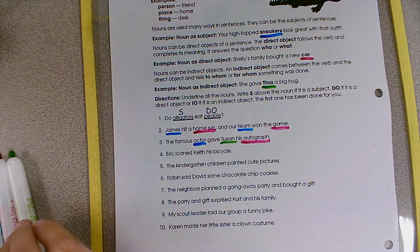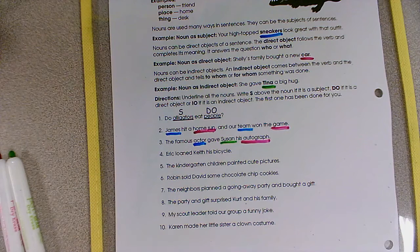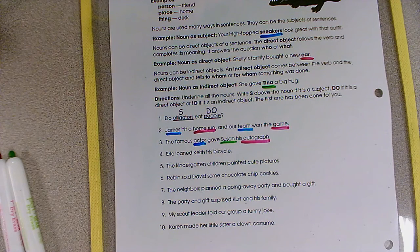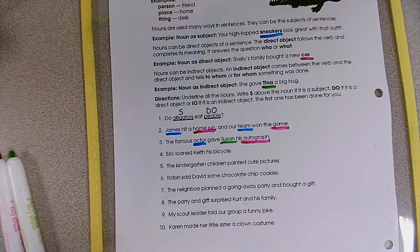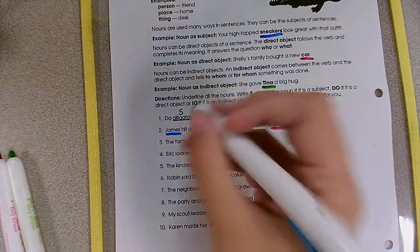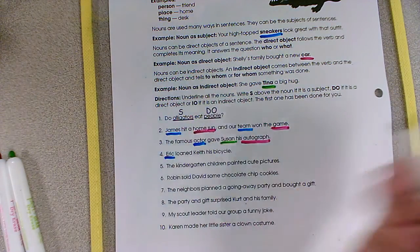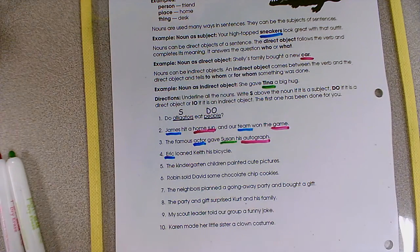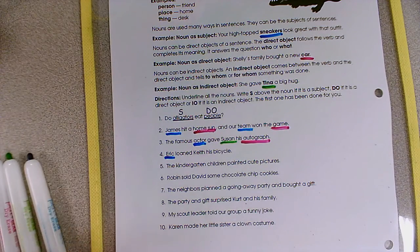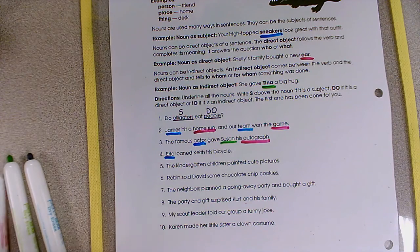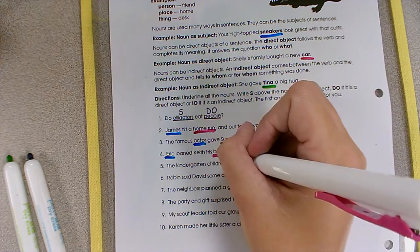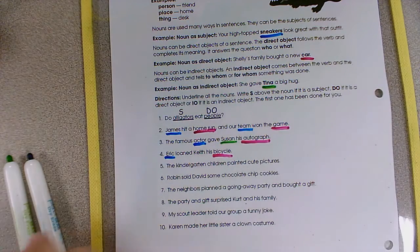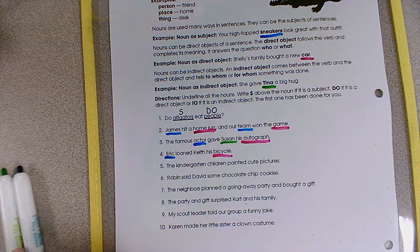Number four, Eric loaned Keith his bicycle. Let's look for the subject. Who did the action in our sentence? Eric. Eric loaned something. So that means that Eric is our subject. Then we can ask ourselves, what did Eric loan? He loaned his bicycle. It means that bicycle is his, is the, sorry, direct object.